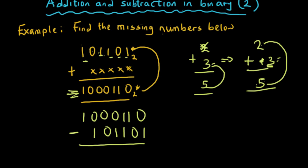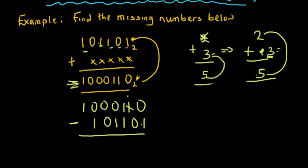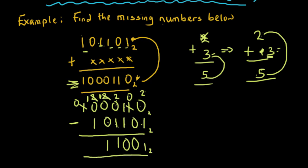Let's subtract. Zero minus one is impossible, so we borrow. Working in base two, when it comes here it becomes two. Two minus one is one. Zero minus zero is zero. One minus one is zero. Zero minus one is impossible, so I borrow — this becomes zero, and when it comes here it becomes two. I borrow again, this becomes one, it becomes two, borrow again, becomes one, becomes two. Two minus one is one, one minus zero is one, one minus one is zero. So my answer is 11001 in base two.